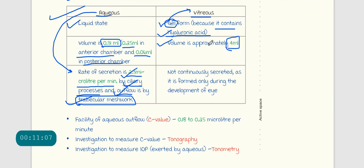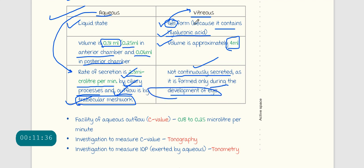The vitreous humor is not continuously secreted in the body. It is formed during the development of the eye and is not replenished continuously. In contrast, aqueous humor is continuously secreted at the rate of 2.3 microlitres per minute.